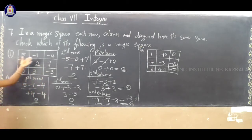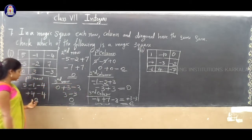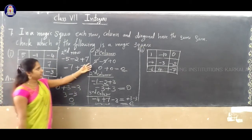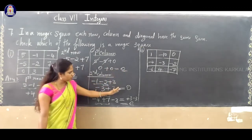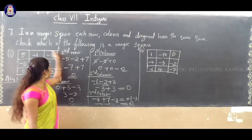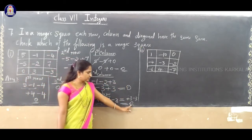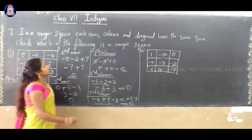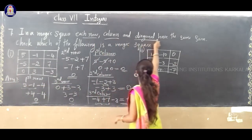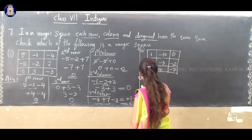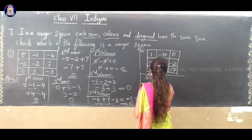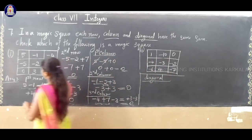So, we checked each row and each column. In all cases we got the same answer: 0. Each row answer is 0, each column answer is 0. Now we need to check the diagonals. First diagonal: 5, minus 2, minus 3.